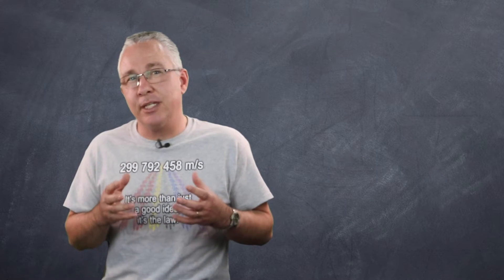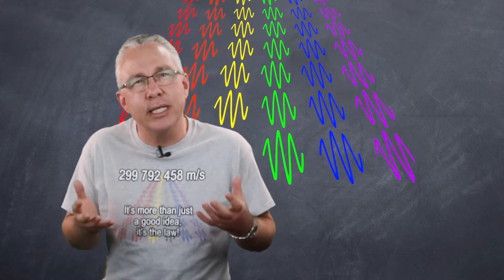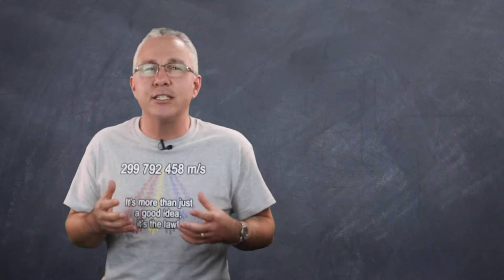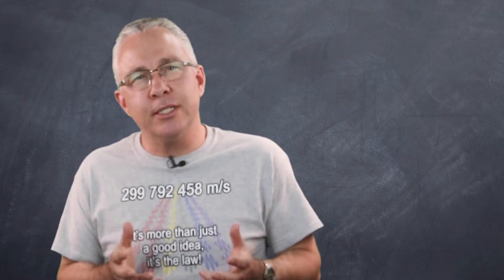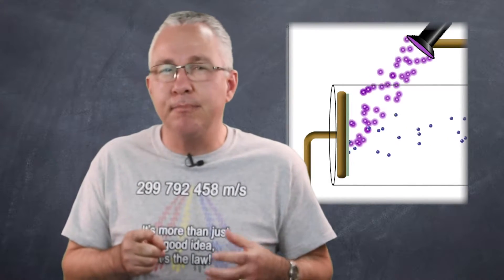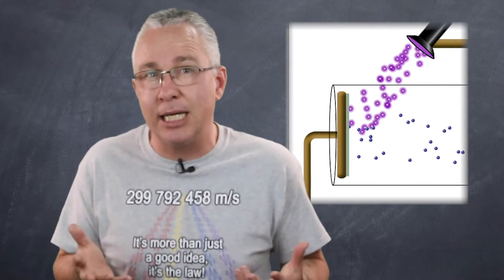Now in 1905, in one of five papers that Einstein published that year, Einstein argued that light travelled in discrete packets. Now we call these photons now. But basically this explained what we refer to now as the photoelectric effect. In other words, the emission of electrons by shining light onto metals could only be explained by treating light as a stream of particles.